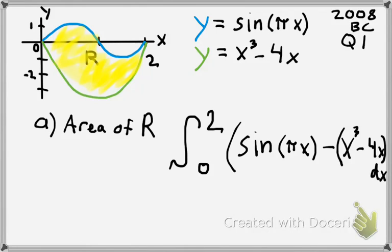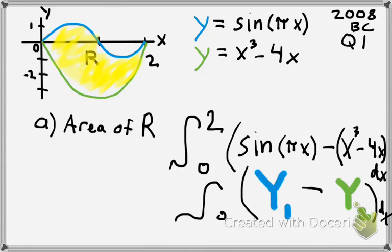That parenthesis is there because if you were to evaluate this using anti-derivative rules, you would have to distribute the negative. If you type this into your calculator, a simple way to do this would be you have your y1 be the first function and then you would subtract that from the green y. You would integrate from 0 to 2, and you would get a pretty nice number, 4.